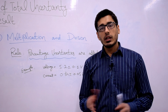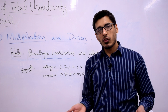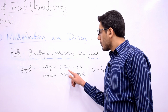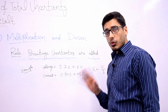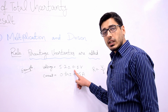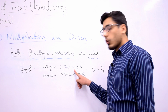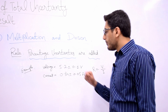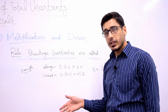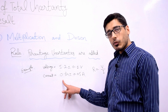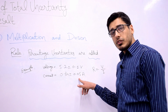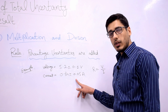Let's start with an example. Let's say that you have measured the voltage across an electrical component using a voltmeter and your measurement is 5.2 ± 0.1 volt, where 0.1 is the absolute uncertainty of the voltmeter, which is also equal to the least count. You have also measured the current flowing through this electrical component using an ammeter, and your measurement is 0.84 ampere with an absolute uncertainty equal to the least count of 0.05 ampere.